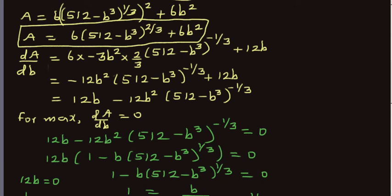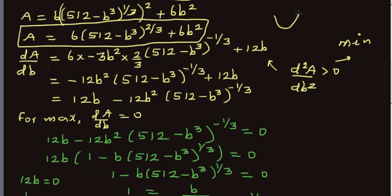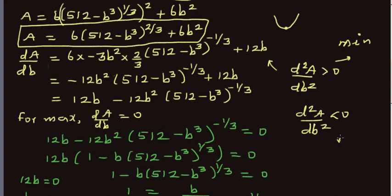To confirm the result mathematically, you must compute the second derivative d²A/dB². If d²A/dB² > 0 the curve is concave up, indicating a minimum. If d²A/dB² < 0 the curve is concave down, indicating a maximum. So for the maximum surface area, the second derivative should be negative.